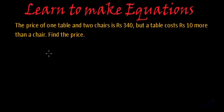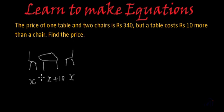So let's assume we have a table and then we have two chairs. And if we assume that the cost of the chairs are x and x, the cost of one chair is x. So the cost for the another chair will also be x, but a table costs rupees 10 more than a chair. So if the cost of the chair is x, the cost of table is x plus 10.